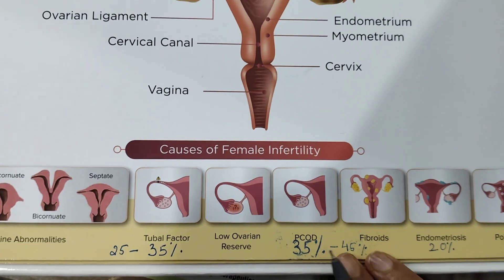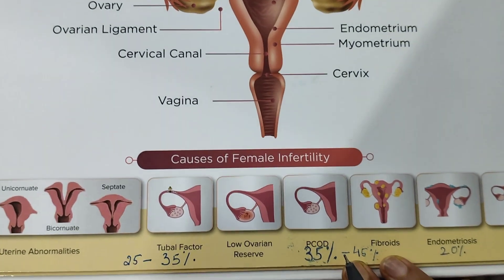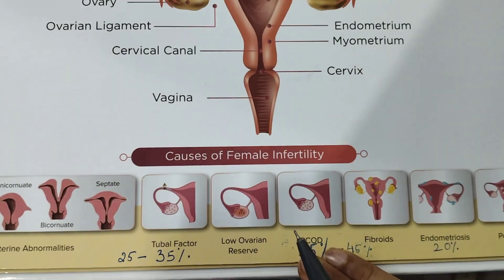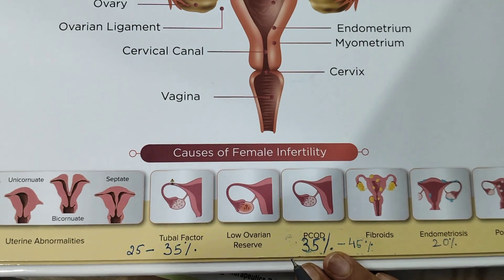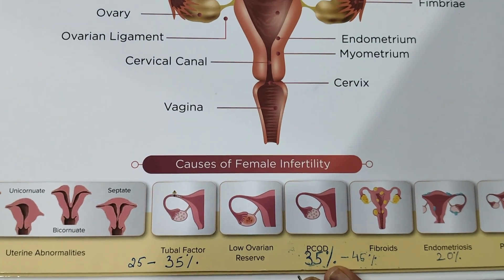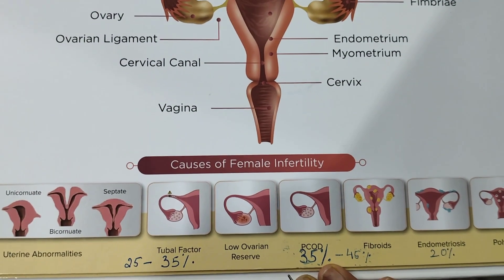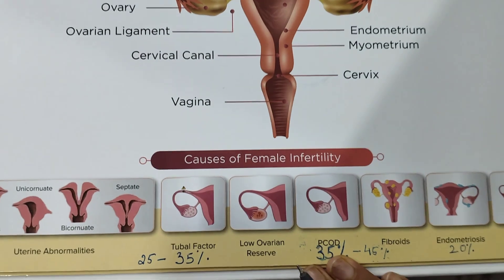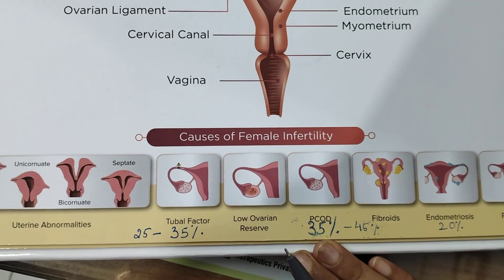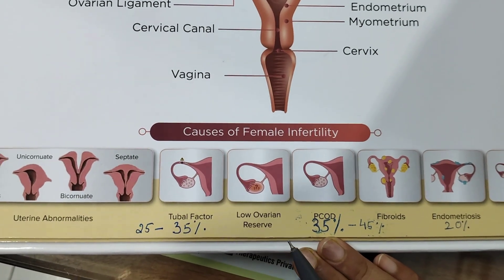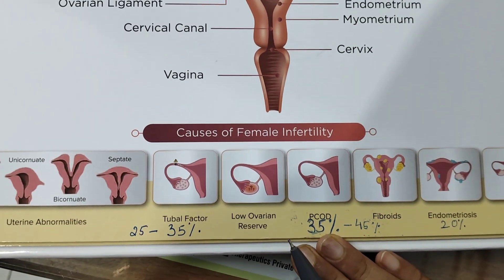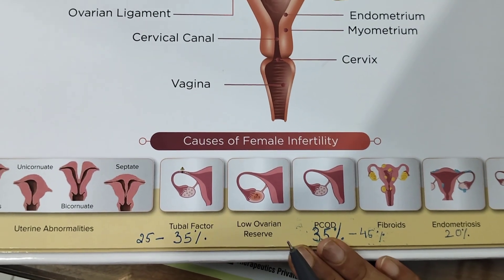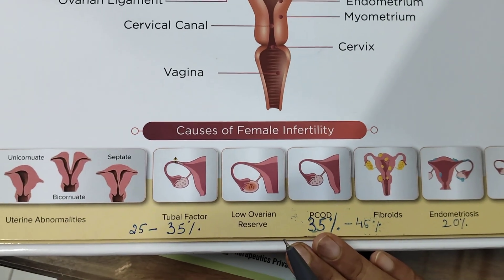PCOD accounts for almost 35 to 45% of cases. In a PCOS patient, there are irregular periods, there can be weight gain, facial hair, pimples, neck darkening, underarm darkening — it is a hormonal imbalance. The best part about PCOD is that it has a very good outcome — good prognosis with lifestyle changes and proper hormonal treatment.